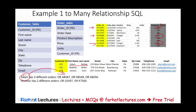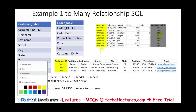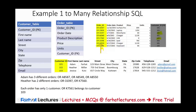Looking at another example, Heather — customer 102 — has two orders, both referencing customer ID 102. So one customer, Heather, has many orders. However, looking at it from the other direction, each order has only one customer. For example, order ORK7561 has only one customer: customer 103, who is Jessica. So the relationship is one customer to many orders, but each order will only ever have one customer.